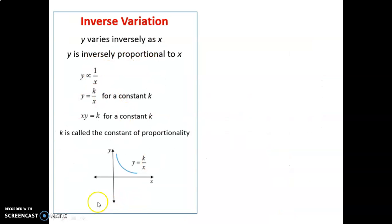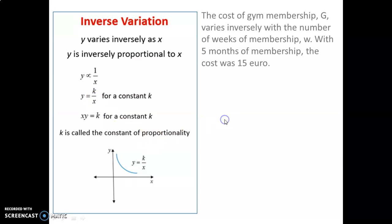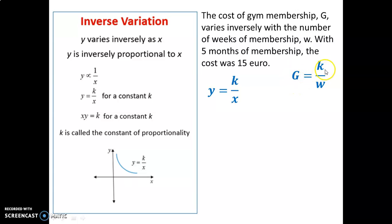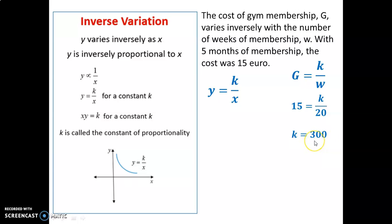Let's try this one. Here's inverse variation — just like direct, except y is related to k over x instead of k times x. If we try that problem, it's inverse variation as stated. We begin with the inverse variation model, replacing y and x with the variables introduced: g and w. So g, cost of membership, varies inversely with the number of weeks, and there's a constant. To find the constant, plug in the values we know: membership costs 15 after 5 months. But our model is for weeks, so instead of putting 5 here, we put 20 — because 5 months times 4 weeks per month is 20 weeks. That allows us to solve for k, which is 300. Now we have our model: gym membership g equals 300 over w.